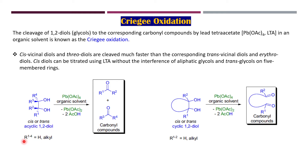In the general reaction, R1, R2, R3, and R4 can be H or alkyl, and we use lead tetraacetate where lead goes from the +4 to +2 state, producing diacetate, and we get the corresponding carbonyl compounds. In the case of a cyclic 1,2-diol, it leads to oxidative cleavage of the C-C bond, forming carbonyl compounds. If R is H, both ends give aldehydes; if R is alkyl, the products are ketones.